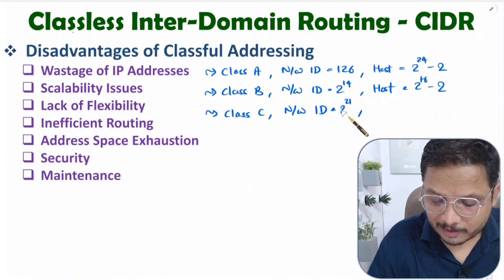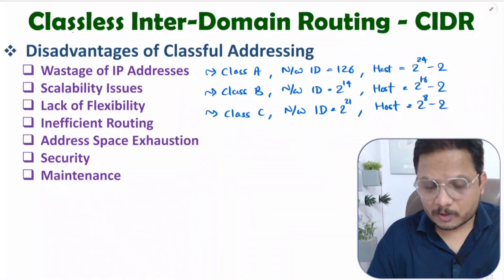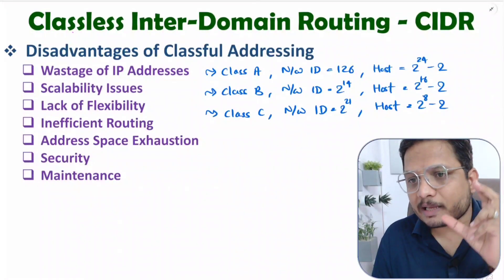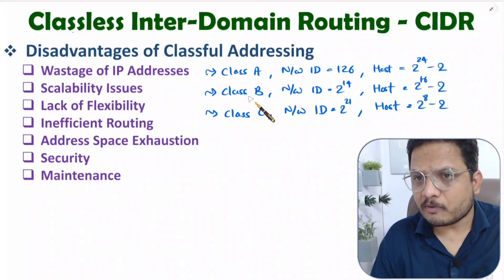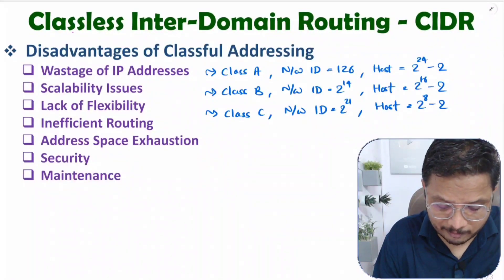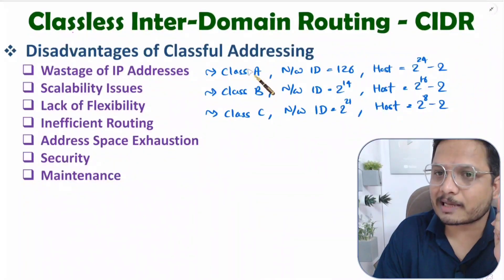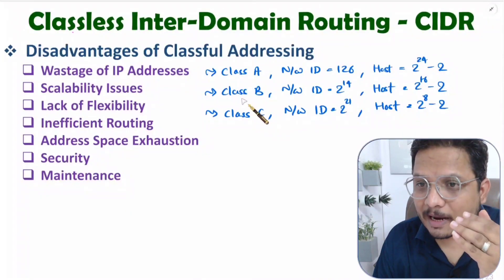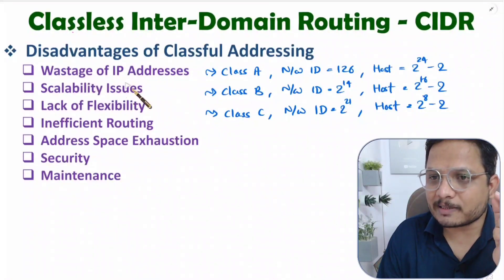With Class C, 2 to the power 21 network IDs are available, and with each ID, 2 to the power 8 minus 2 hosts. Here we are wasting too many network IDs even if some network doesn't need them. Scalability issue is there because with each class the fixed number of IPs are available and you cannot scale it. Flexibility issue is also there — if somebody needs only 16 IPs, using a full class wastes addresses.